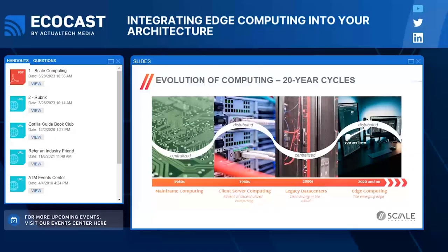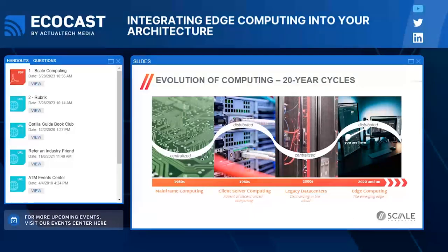I've been in the IT space my entire career. I jumped on board during the client-server computing phase — things like Novell Network, early Windows NT, and even OS/2. Client-server computing started to show the benefits of centralization: shared infrastructure, shared storage, standardized IT practices. Some of those moved into cloud resources — instead of building and managing large corporate data centers, organizations leveraged economies of scale with centralized cloud providers.